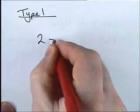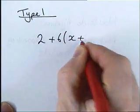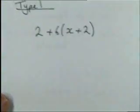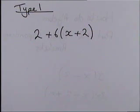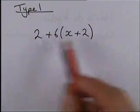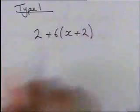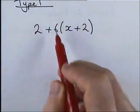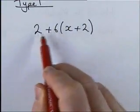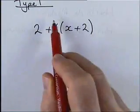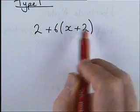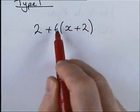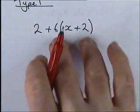Now there are two types of grade C question. Type one looks like this: 2 + 6(x + 2). Many students see that and think it's double brackets, so they apply the double bracket method — but it's not. If you read it carefully, you have two plus six lots of whatever is in this bracket. You have two and then six of these brackets, not two of one bracket times another.